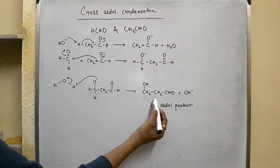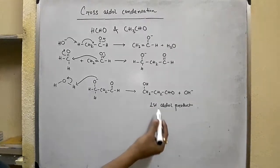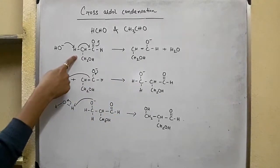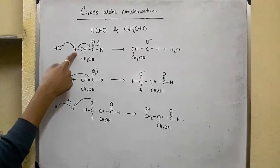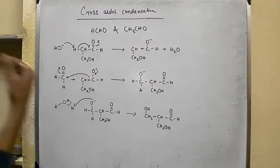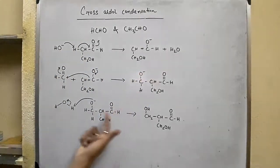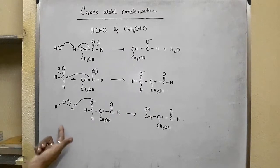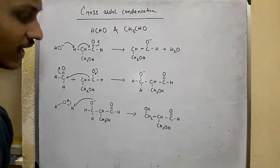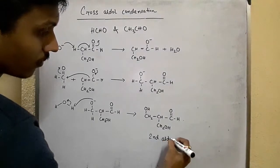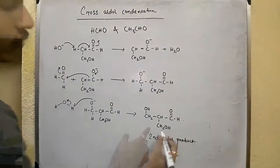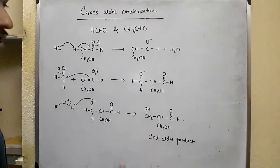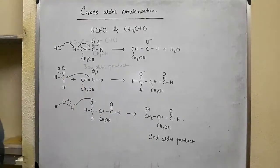Since the first aldol product still contains alpha hydrogen atoms, it further reacts with formaldehyde. In this second round, the base grabs one of the alpha hydrogen atoms of the first aldol product, forming an enolate ion which attacks the electrophilic carbonyl group of formaldehyde to form an alkoxide ion, which is then protonated by water to give the second aldol product. This product further reacts because it still contains alpha hydrogen atoms, and the same mechanism gives the third aldol product.